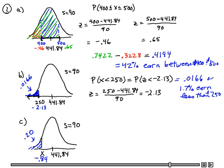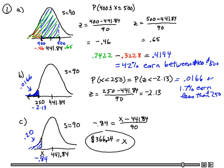Now in my z-score formula then, I'll have a negative .84 is equal to x minus 441.84 divided by 90. Now if I multiply both sides by 90 and I add 441.84, I'm going to get x equals 366.24. So 20% of the workers here are making less than 366.24.